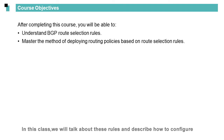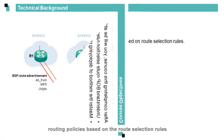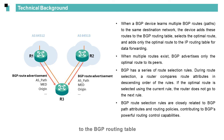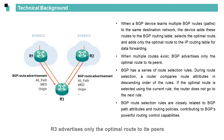In this class, we will talk about these rules and describe how to configure routing policies based on the route selection rules. In this topology, R3 learns two routes to the same destination and adds them to the BGP routing table. R3 selects the optimal route and adds it to the IP routing table, and advertises only the optimal route to its peers.